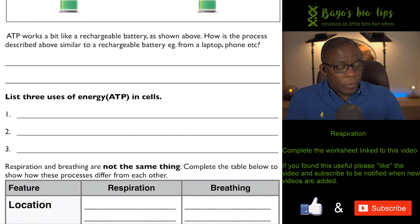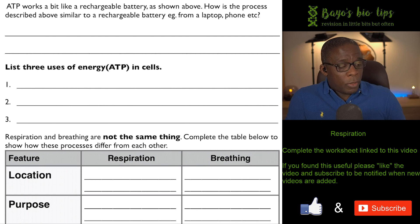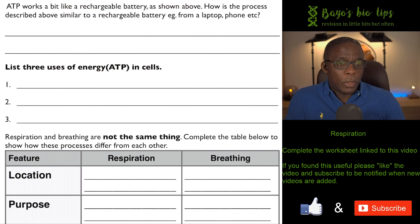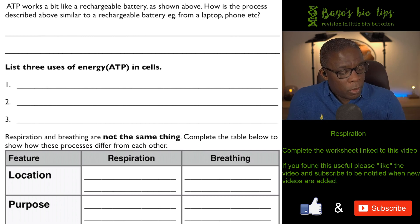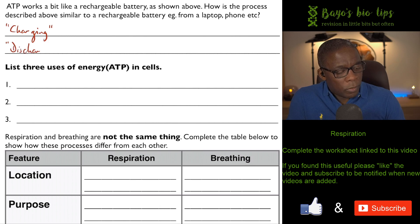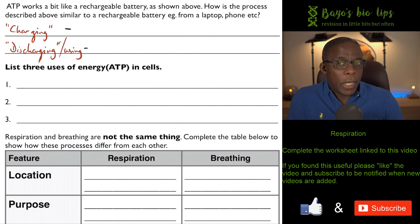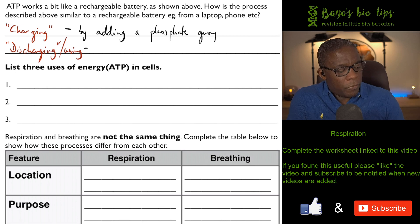ATP works a bit like a rechargeable battery. How is this process similar to a rechargeable battery? When you charge it up you're adding a phosphate group to ADP, converting it to ATP and storing energy.